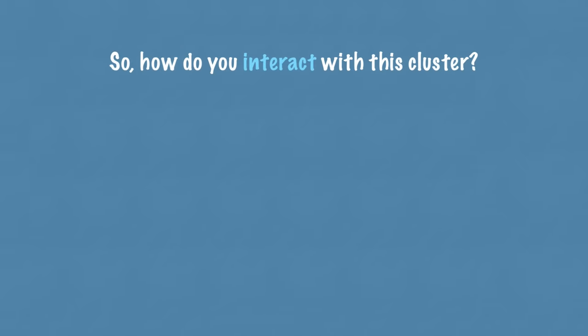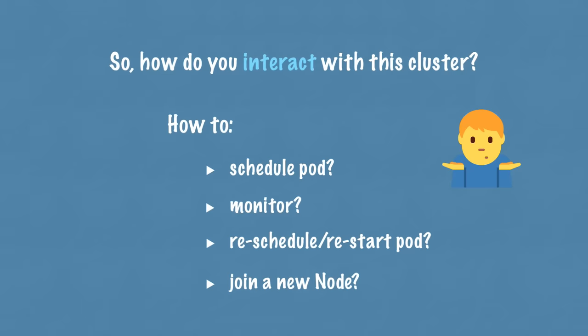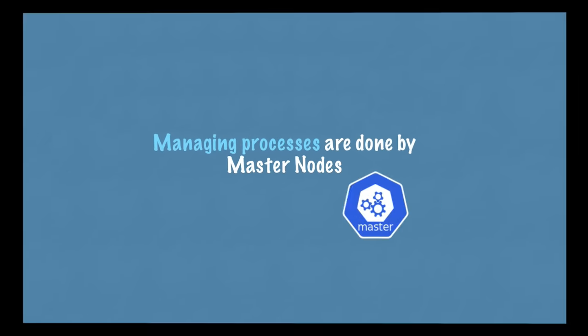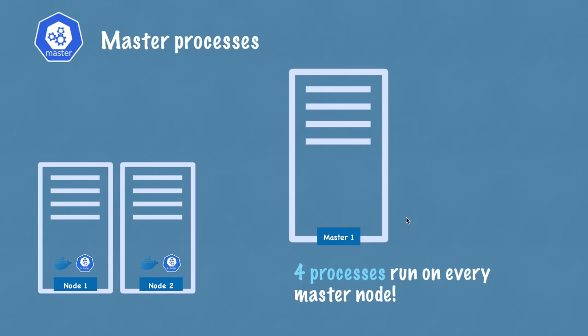To summarize: Kubelet and Kube Proxy must be installed on every Kubernetes worker node, along with an independent container runtime, for the cluster to function properly. But how do you interact with this cluster? How do you decide on which node a new pod should be scheduled? If a replica pod dies, what process monitors it and reschedules or restarts it? When you add another server, how does it join the cluster? The answer is that all these managing processes are done by master nodes.